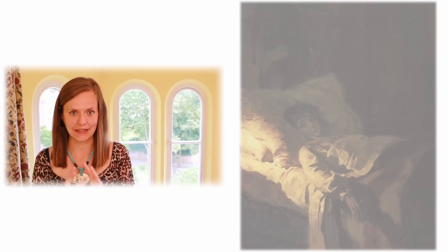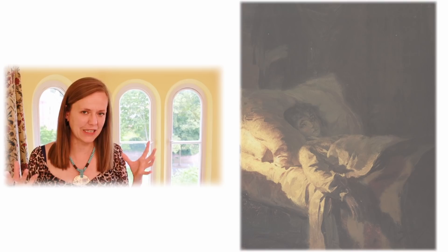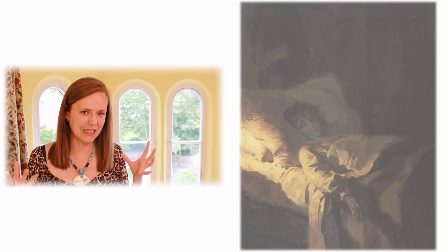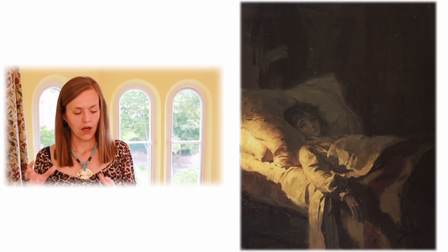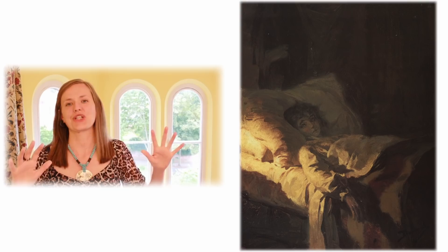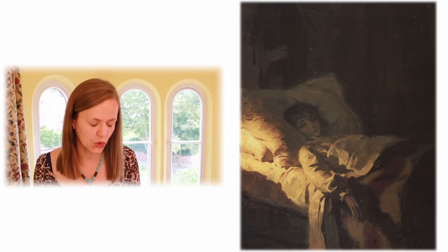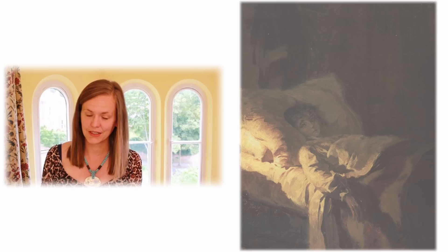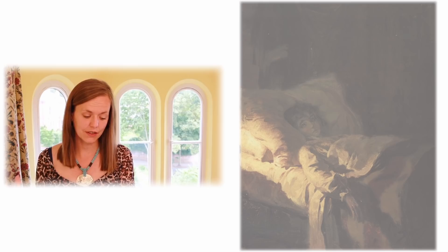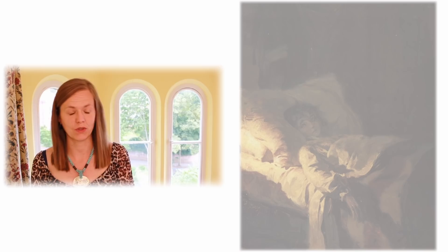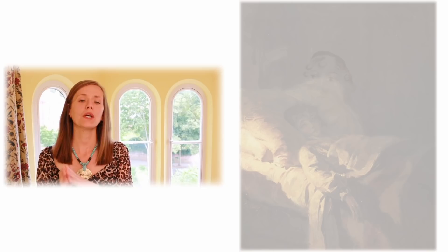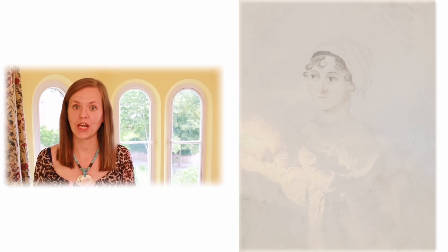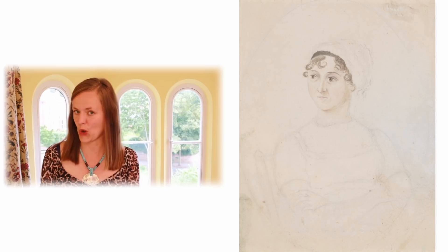At Southampton, they caught typhus fever and were gravely ill, but Mrs. Cawley still didn't inform the families of the peril they were in. Jane Cooper, however, wrote to her mother to explain the situation. The mothers anxiously rushed to Southampton to collect their gravely ill daughters and took them home. The three young girls recovered, but during this escapade Mrs. Cooper — Mrs. Austen's sister — caught typhus and later died on the 25th of October 1783. It is rather tragically that we have Jane Cooper and Mrs. Cooper to thank for Jane Austen not dying of typhus fever when she was seven years old.